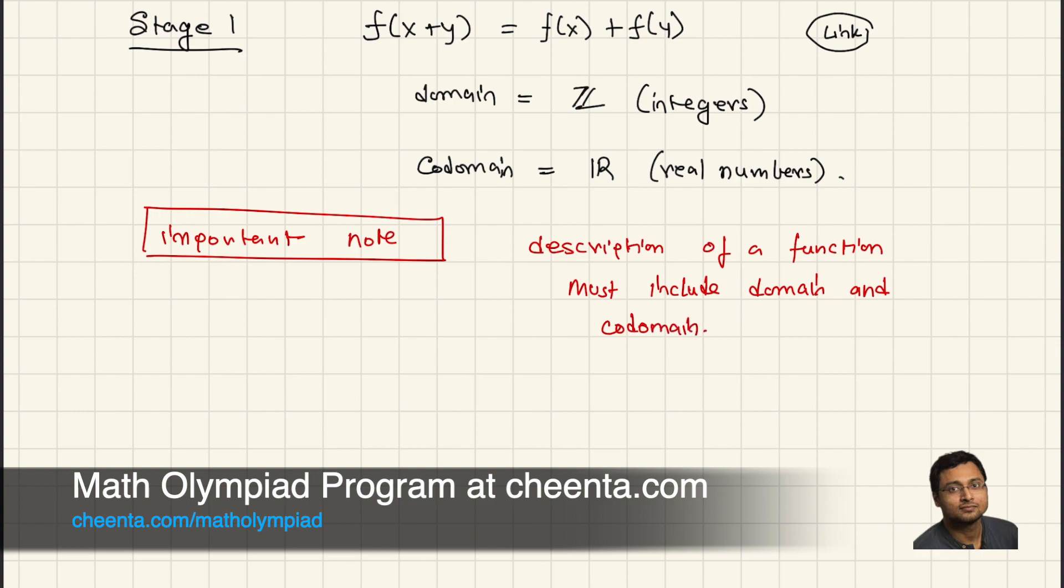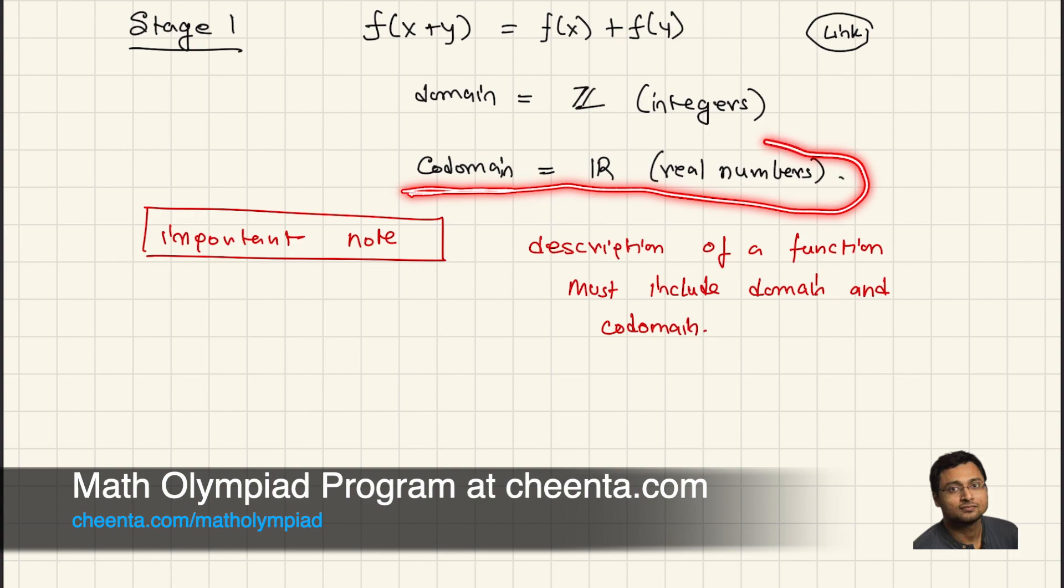Just giving the formula for the function is not enough. You have to tell where the input values are coming from and where the allowed output values are. Only when these two things are mentioned, then the description of the function is complete.